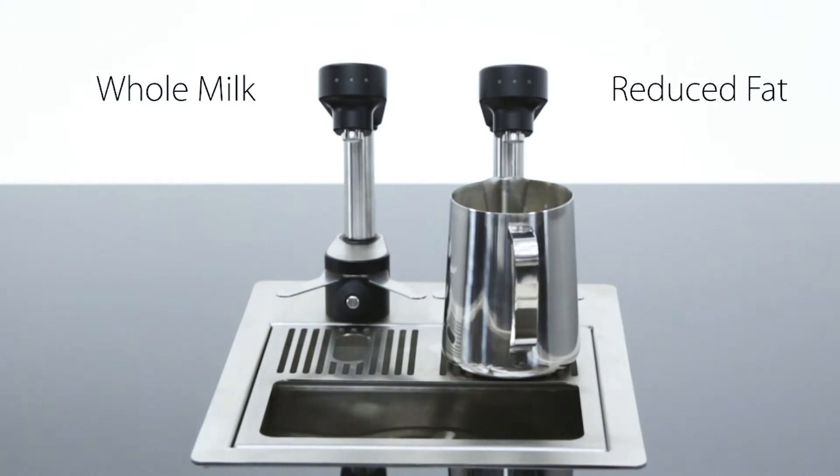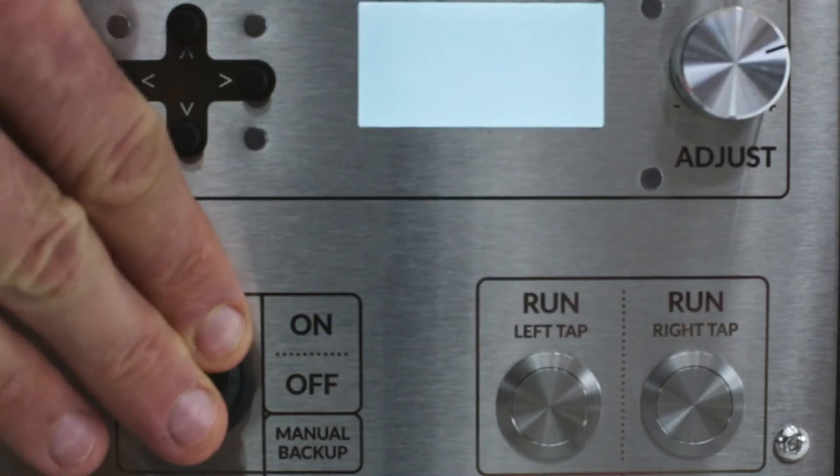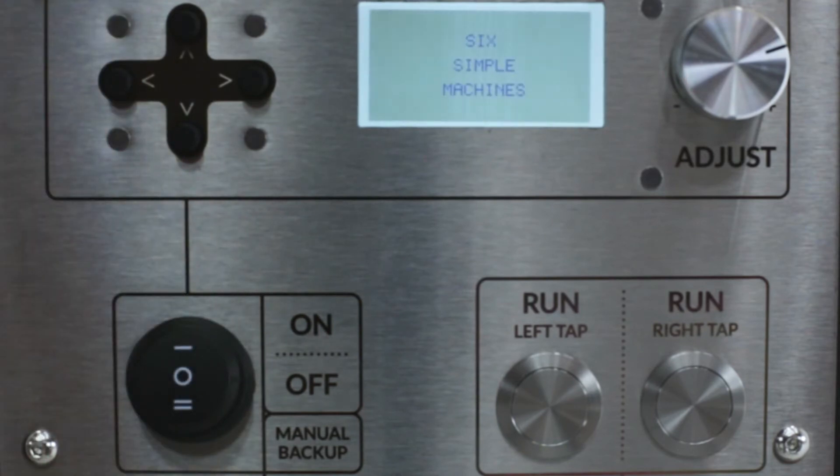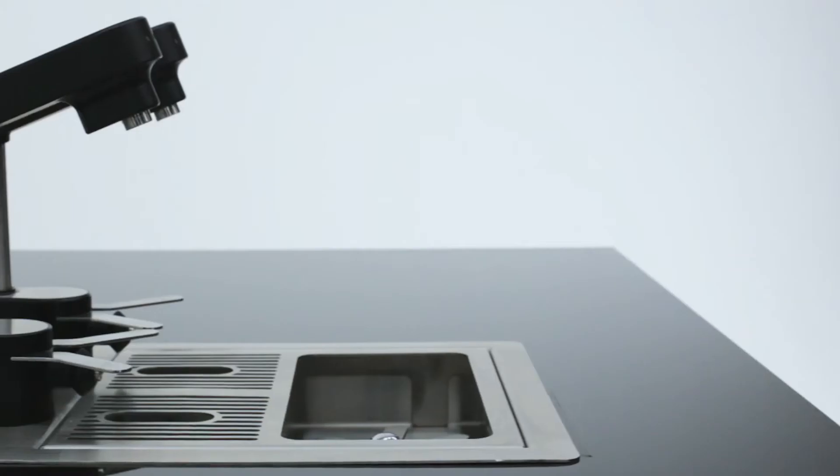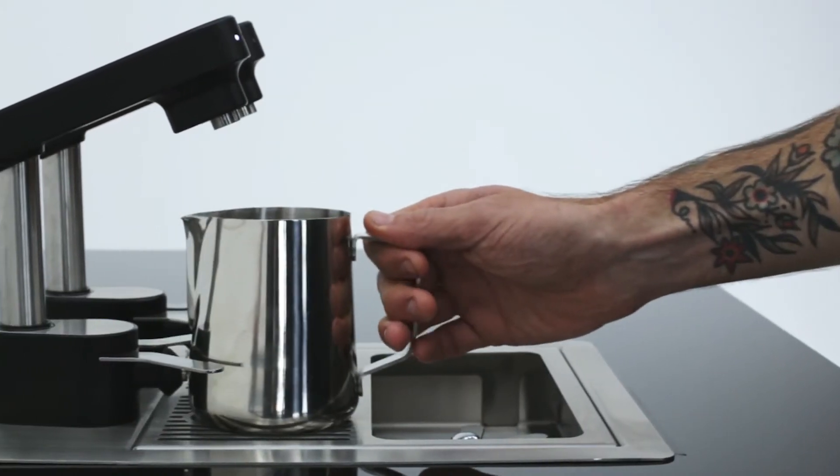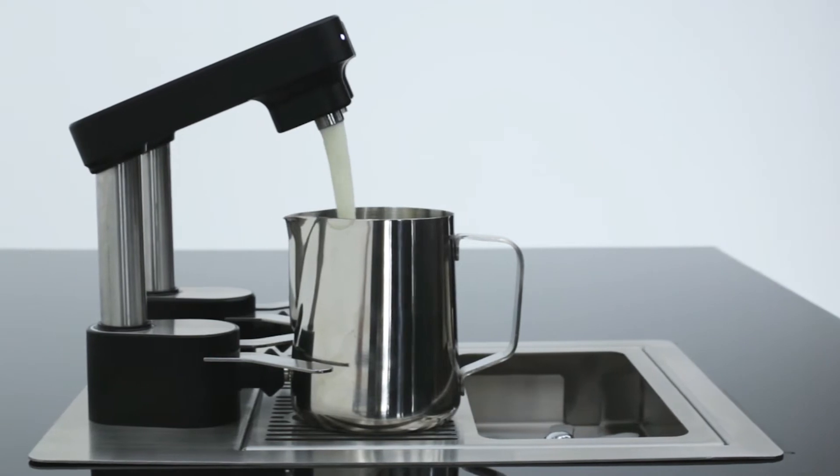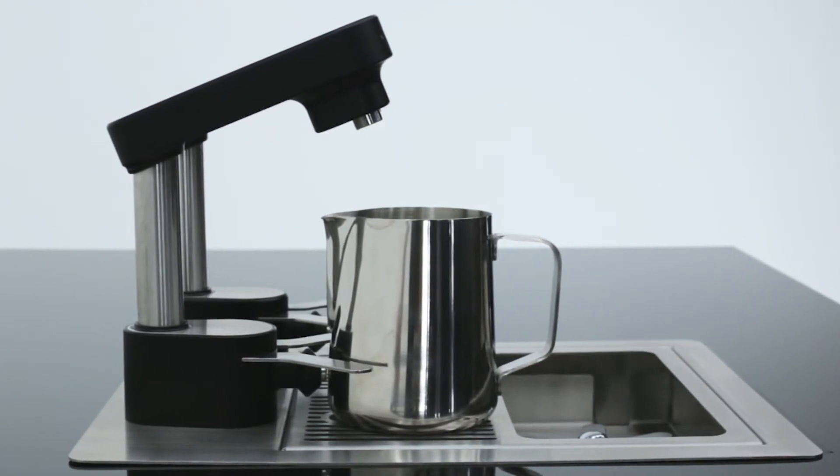To dispense milk, make sure the switch on the control unit is in the on position. Use a jug to activate a dose by pushing the jug against the jug size sensor. Use a push and release action. This will activate and dispense a pre-programmed amount of milk into the jug.